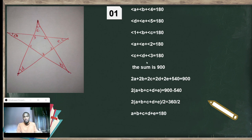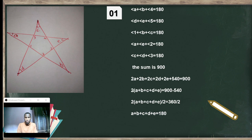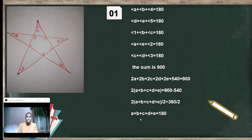So 2(A plus B plus C plus D plus E) plus 540 equals 900. Bringing 540 to the right side gives 2(A plus B plus C plus D plus E) equals 360. Dividing by 2 gives A plus B plus C plus D plus E equals 180 degrees. Proved!